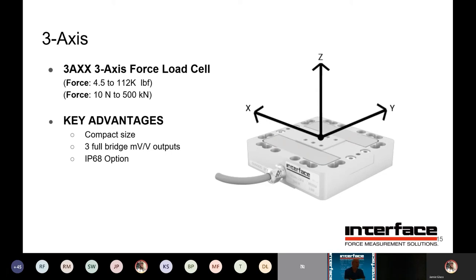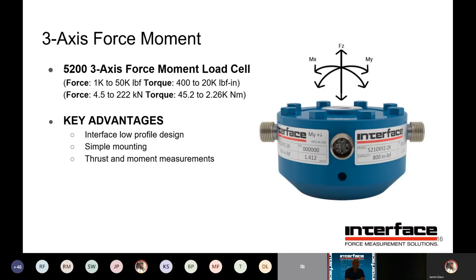Moving to our three-axis load cells: as Brian described, you've got a three-load-cell type design with a lot of symmetry — three full-bridge outputs. If you're used to working with a regular millivolt-per-volt load cell, you can basically operate each one of these bridges as a regular standalone output. It's a small size and has an IP68 option. The 5200 series has force in the Z and then moments — like a windshield wiper over the top of the load cell. Based on the Interface low-profile design, it has simple mounting: a single hole in the top, a single hole in the bottom, and you get thrust and moment measurements at the same time.